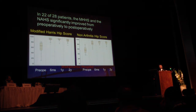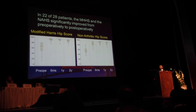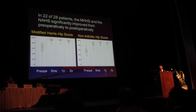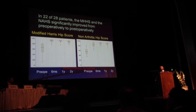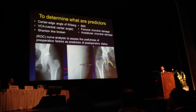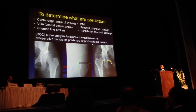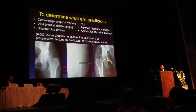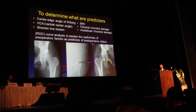In 22 of the 28 patients, the modified Harris Hip Score and Non-Arthritic Hip Score significantly improved from pre-operatively to post-operatively. To determine predictors, we evaluated the CE angle, VCE angle, Shenton line, BMI, femoral chondral damage, acetabular chondral damage, using ROC curve analysis.